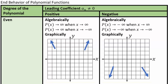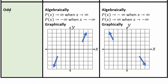In summary for end behavior: if the degree is even and the leading coefficient is positive, both ends go up. If the degree is even and the leading coefficient is negative, both ends go down. If the degree is odd and the leading coefficient is positive, the left hand is down and the right hand is up. If the degree is odd and the leading coefficient is negative, the left hand is up and the right hand is down.